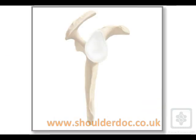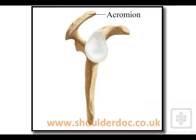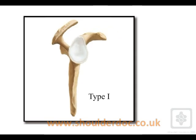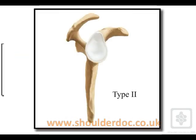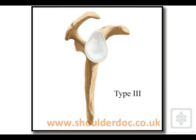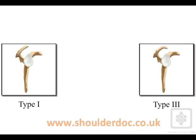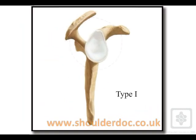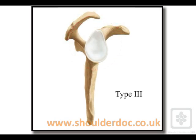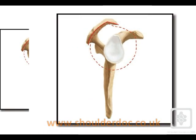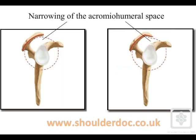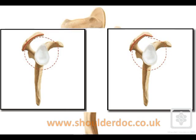The acromion differs in individuals as morphological variants. These were described by Vigliani as type 1, type 2, or type 3. Type 1 is flat, type 2 is curved, and type 3 is hooked. A person with a type 2 or type 3 acromion would be at a higher risk of impingement due to the narrowing of the acromio-humeral space.